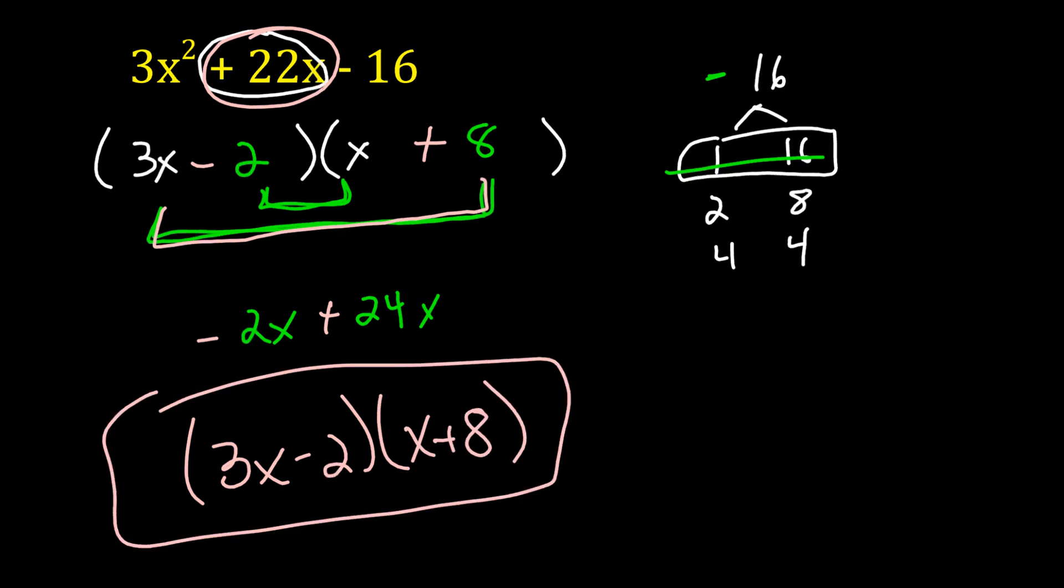So our factors are 3x minus 2 times x plus 8. That is in factored form. Let's look at number 3.